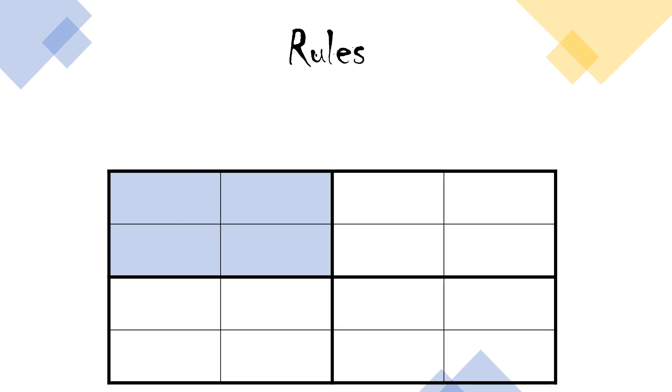The last rule is each region surrounded by thick lines - this highlighted region, this one, this one - so this is one region, second region, third, and fourth. Each region surrounded by these thick lines contains each picture exactly once, like this.